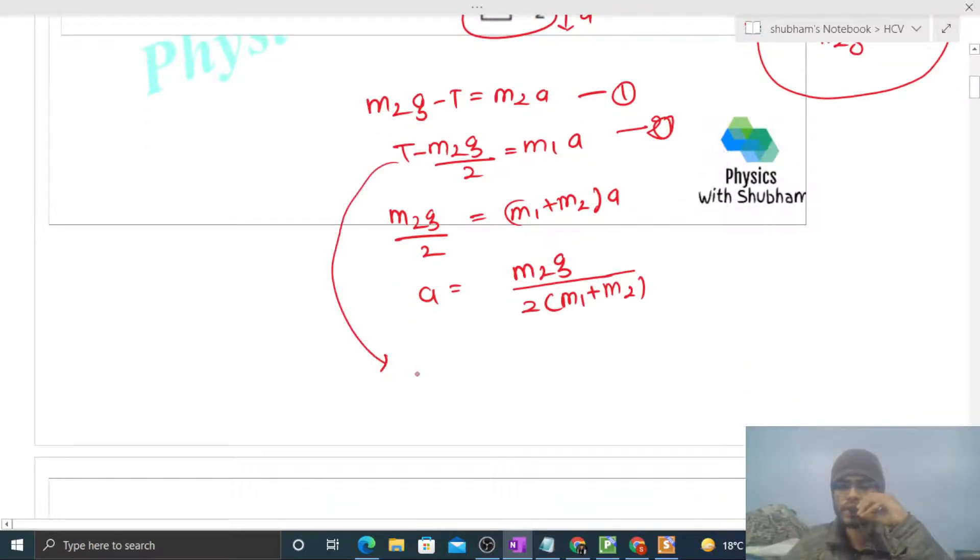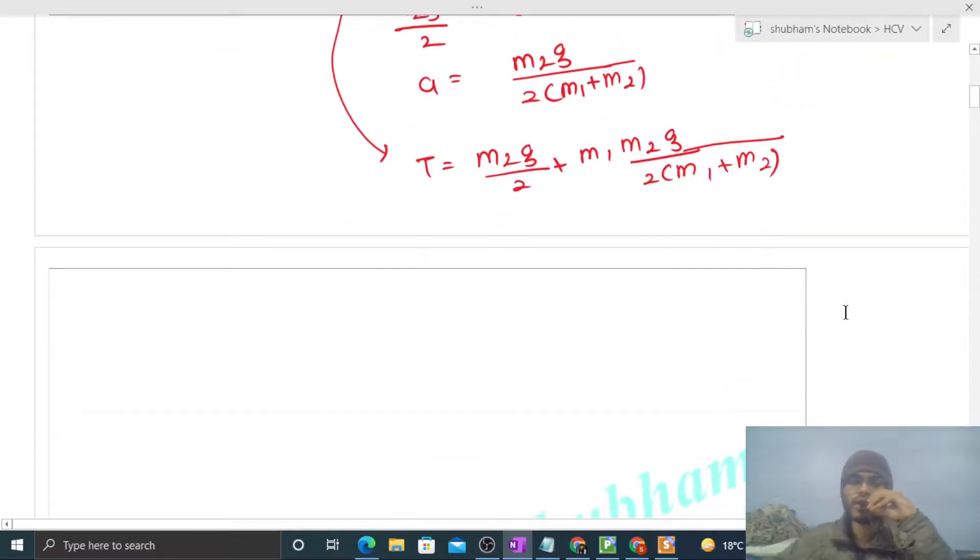Now you can find the value of tension from any equation. From here, tension equals m2g by 2 plus m1 into a, and a is m2g divided by twice of m1 plus m2. So this is the value of tension.